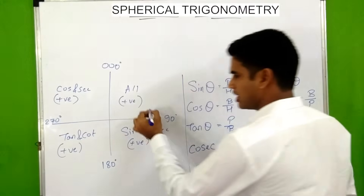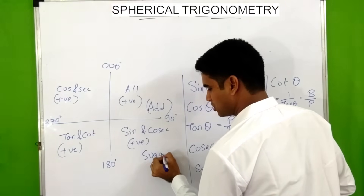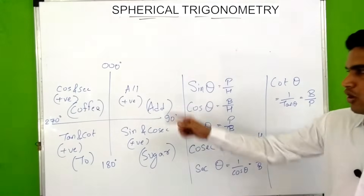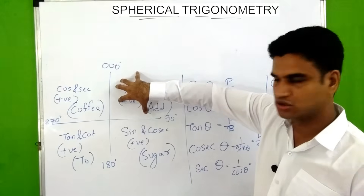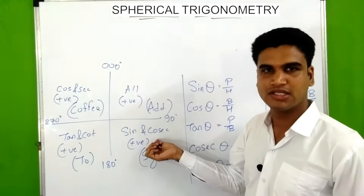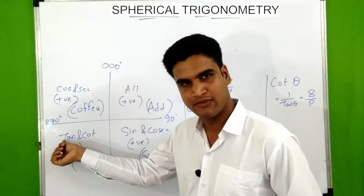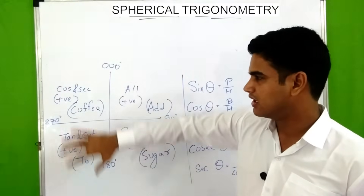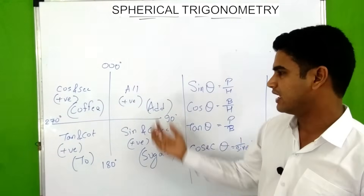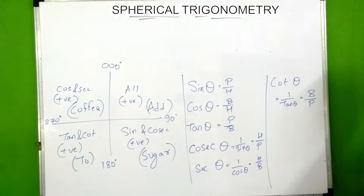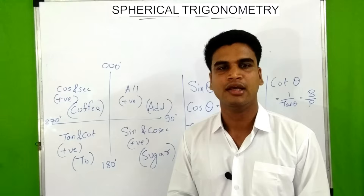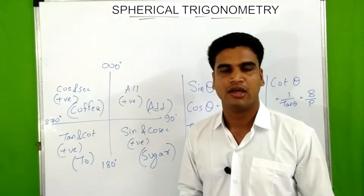Remember this as 'add sugar to coffee.' A for 'all', where all the ratios are positive. S for 'sugar', where sine and cosec are positive and others are negative. T for 'tan', where tan and cot are positive and others are negative. C for 'coffee', where cos and sec are positive and others are negative. You can remember it clockwise as add sugar to coffee. For navigation, we use plane trigonometry in Mercator sailing and plane sailing.